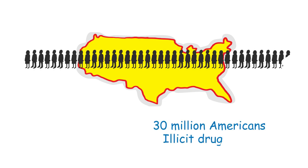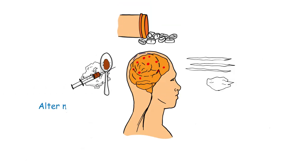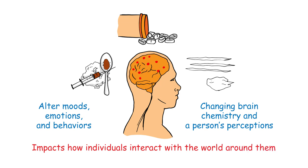Almost 30 million Americans were considered to be current illicit drug users in 2014. Drugs interact with the brain and body to alter moods, emotions, and behavior by changing brain chemistry and a person's perceptions, and by impacting how individuals interact with the world around them.